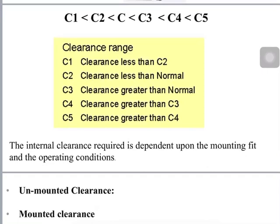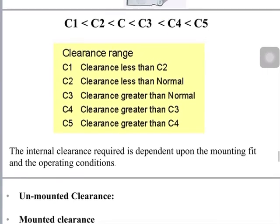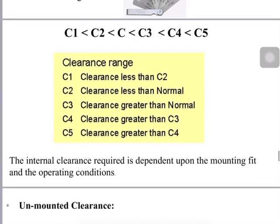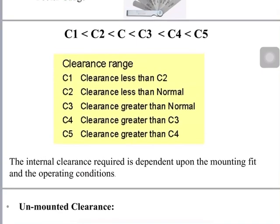Bearing clearances are broadly classified into six types: C1, C2, C (the normal clearance), C3, C4, and C5. Clearance C2 is always greater than C1. Normal clearance C is always greater than C2. C3 is greater than C, C4 is greater than C3, and C5 is greater than C4. If you remember this order you will not forget the bearing clearance classes.